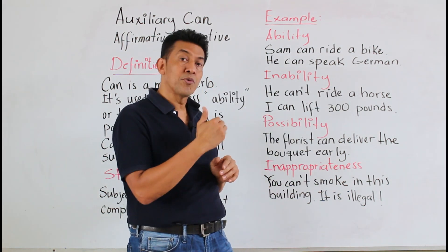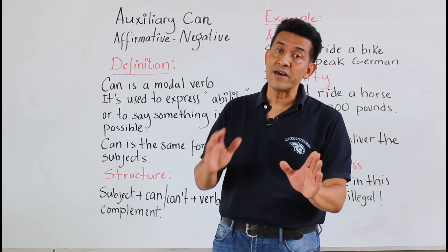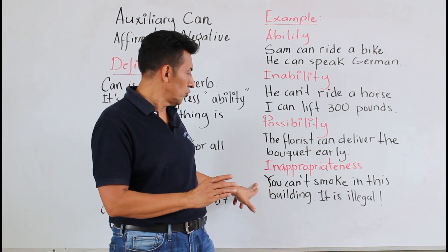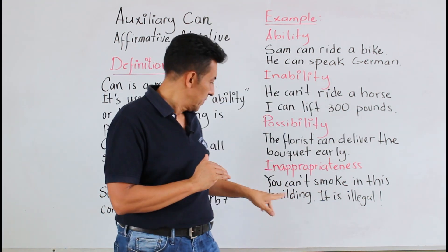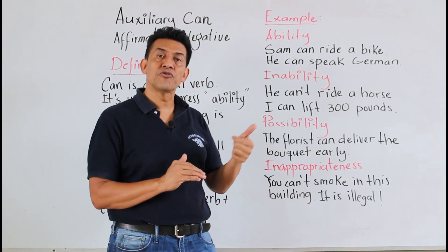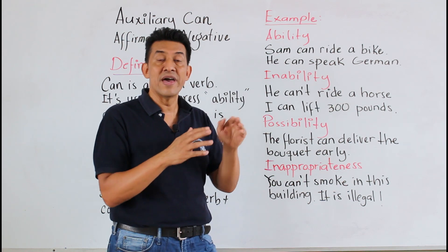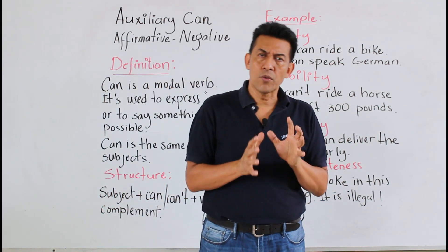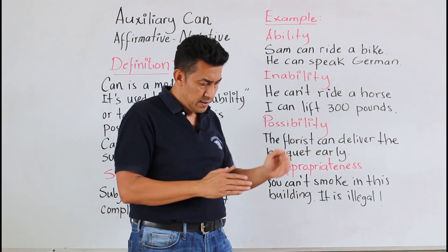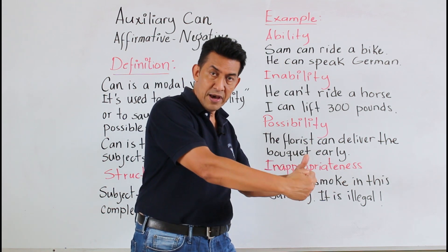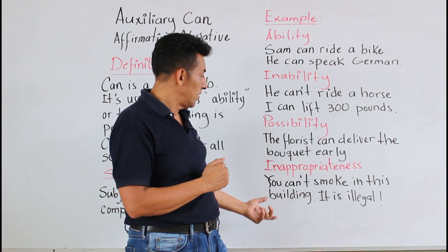Y la otra es de inappropriateness. Esta más que todo es para cuando nosotros tenemos algo que no se puede realizar. Ejemplo: you can't smoke in this building — it's illegal. Tú no puedes fumar en este edificio, es ilegal. Como también, recuerden, cuando personas abordan los buses, dice you can't stay — que no puede quedarse o estarse de pie. Entonces, en ese aspecto se utiliza este tipo de oraciones.